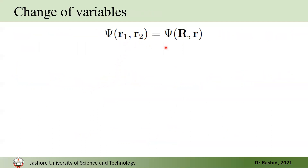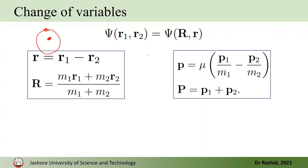Now we wanted to change the variables. From classical mechanics we know that whenever we have a system like the hydrogen atom — a proton at the center with an electron moving around it — this can be expressed as a center-of-mass two-body problem. We define two variables: r for the relative distance between the proton and the electron, and R for the position of the center of mass. The corresponding momenta are p for the relative momentum and P for the total momentum. Here μ is the reduced mass, where 1/μ = 1/m1 + 1/m2.